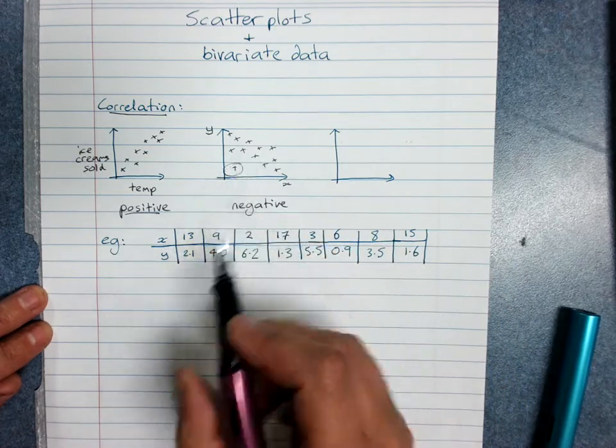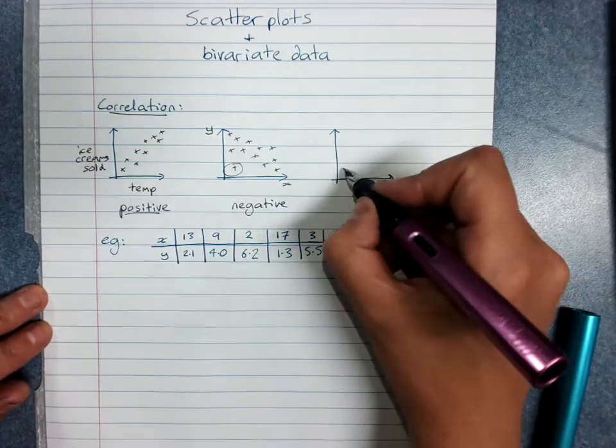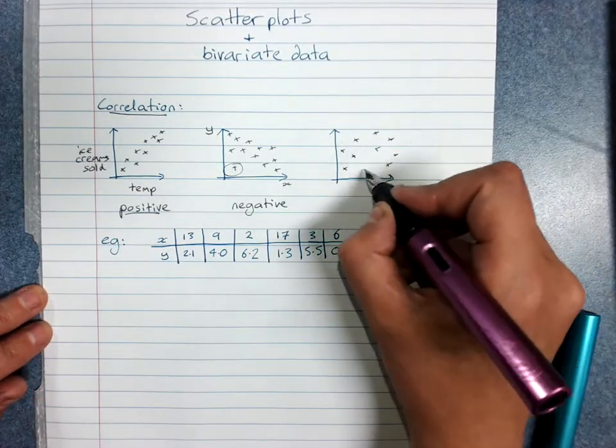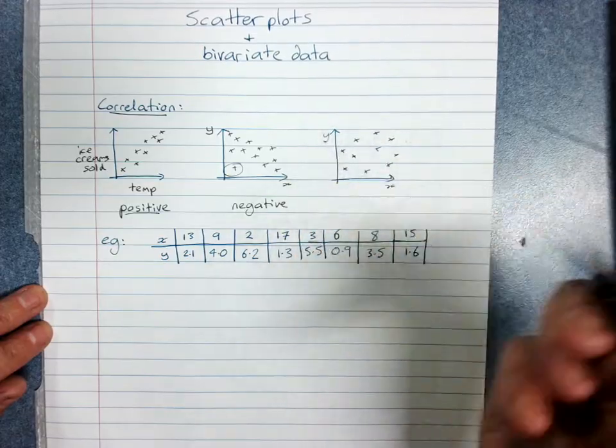We might even say that could be an outlier. You can also have no correlation where you can't see any pattern between x and y at all.